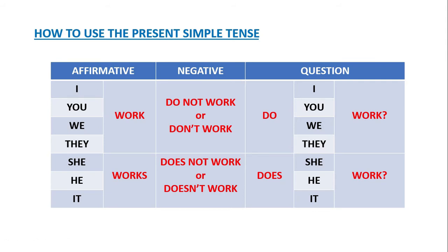Now we are going to move to the question part. In questions, you use the auxiliary verb 'do.' For example: do I work, do you work, do we work, do they work? Or with another verb, for example: do I play, do you play, do we play, do they play? This structure tells you that the sentence is in the present simple tense.